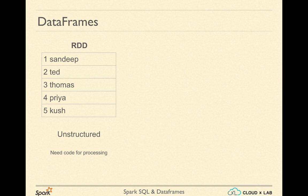Hence, RDD is generally called unstructured data — we do not know the fields inside a record or their data types. To process data in an RDD, we need to mostly write code by way of transformations or actions, which is not as efficient for churning data as SQL or R.